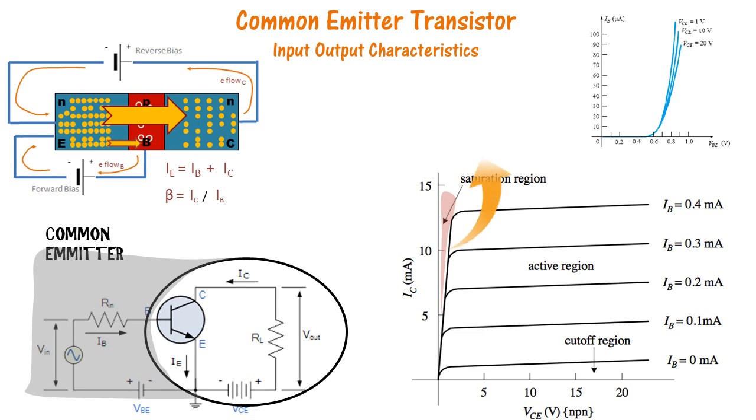In the saturation region, both the emitter and collector are in forward bias. We see that the base current is more than 0 and it is operating in this region. Therefore the emitter is forward biased. The question is, how come the collector is forward biased?